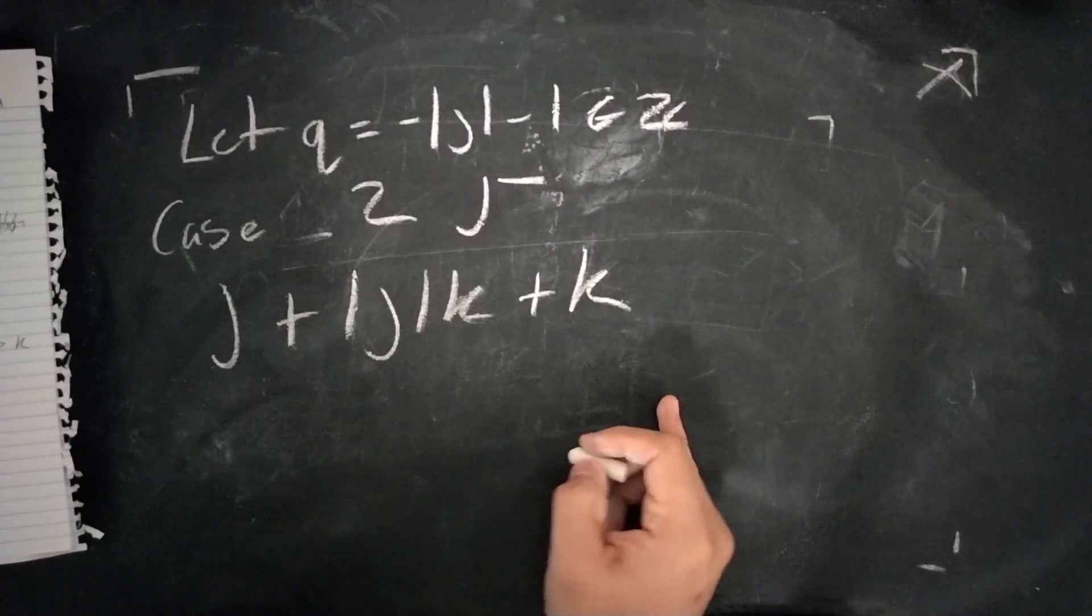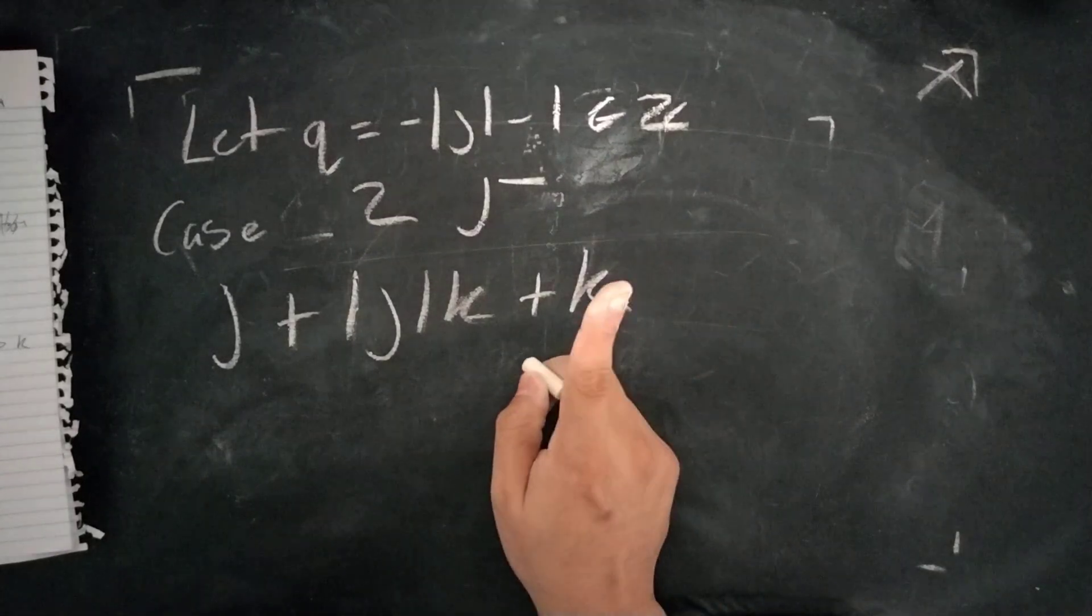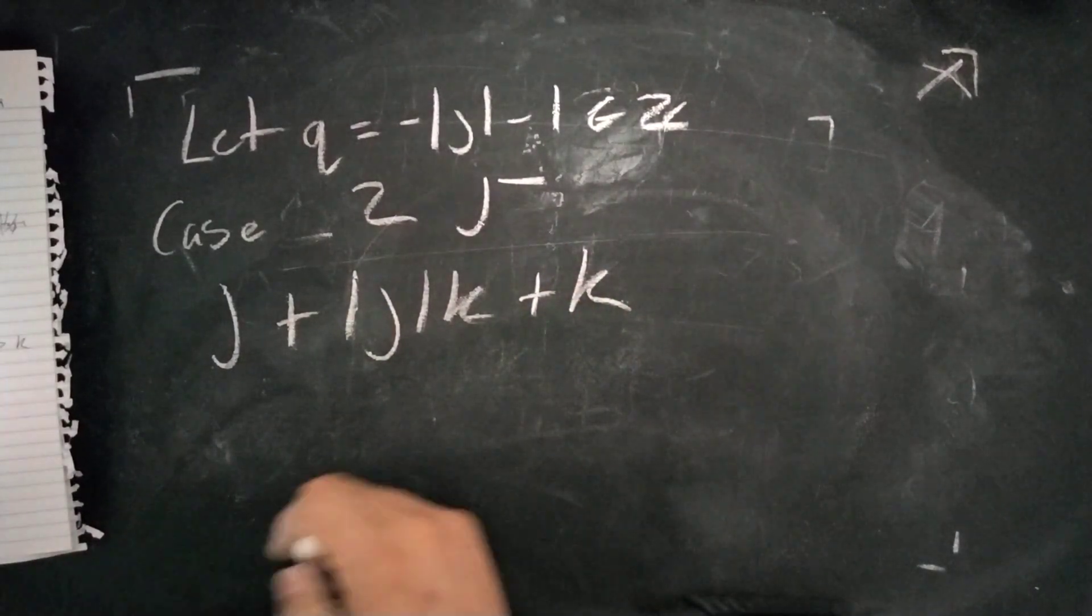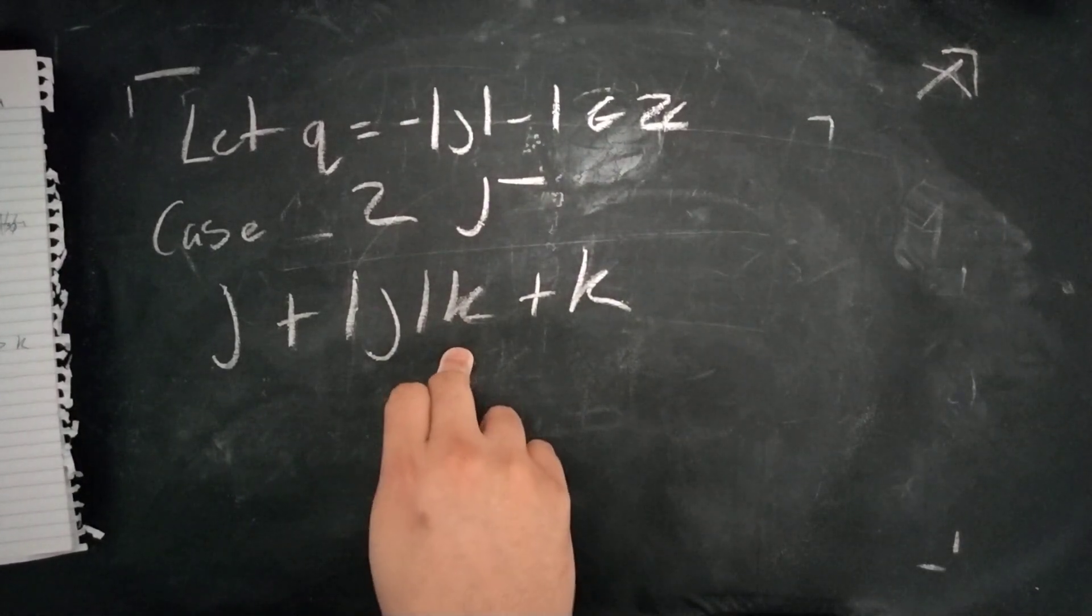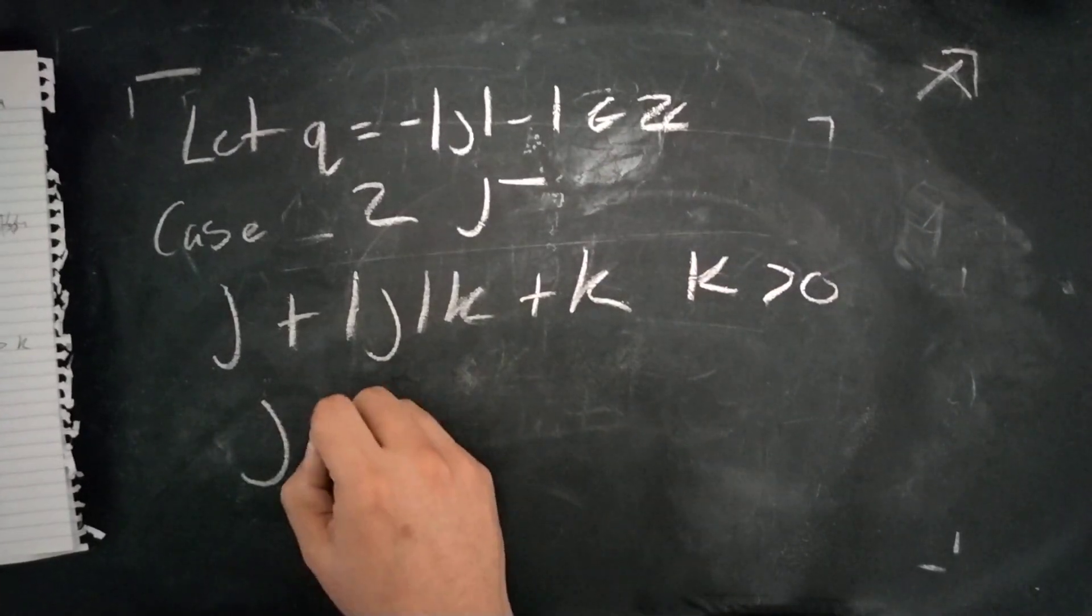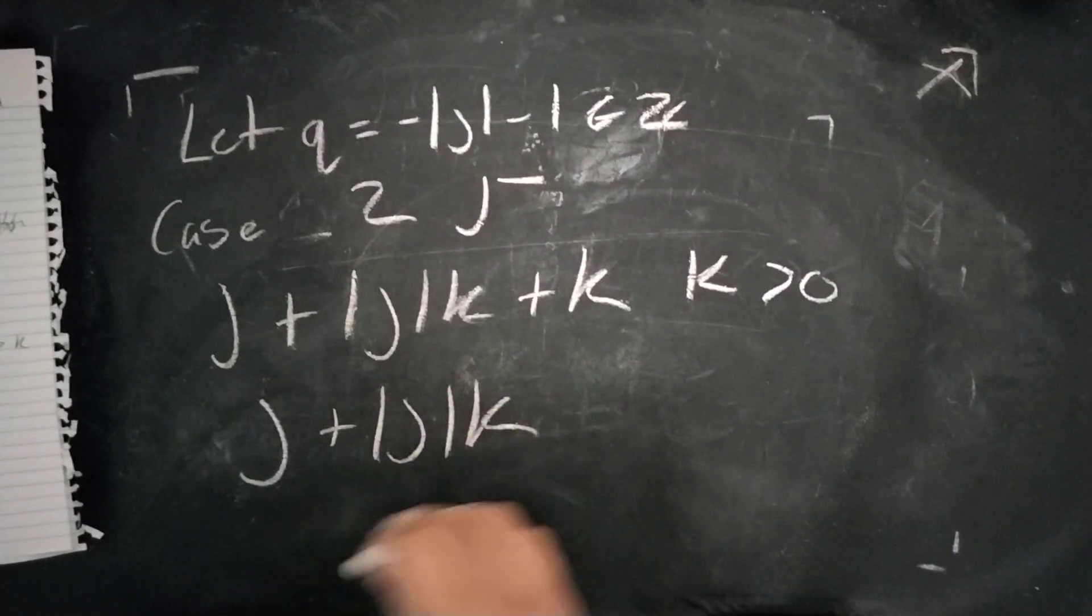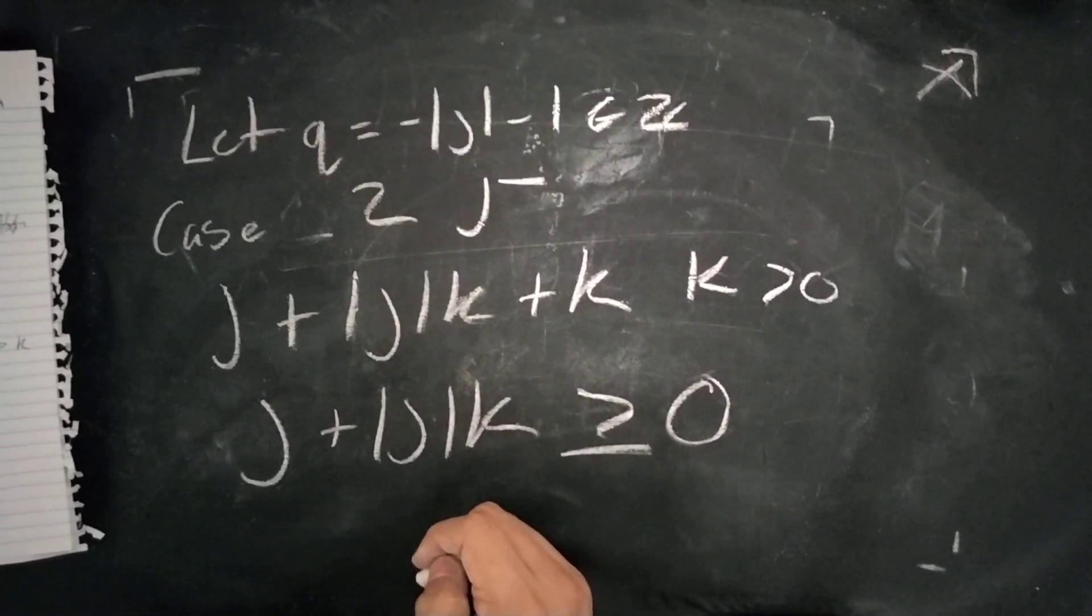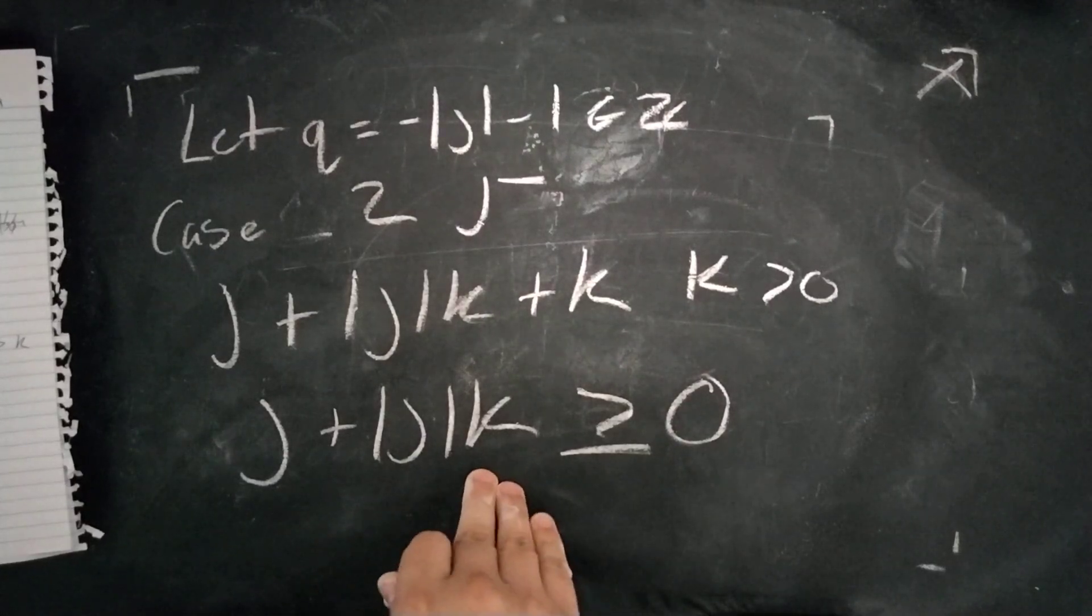And since we know that K is greater than zero, this implies that J plus the absolute value of JK is either equal to or greater than zero. This is because the lowest value that K could possibly be is, in fact, just one.